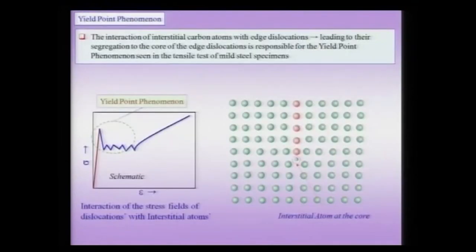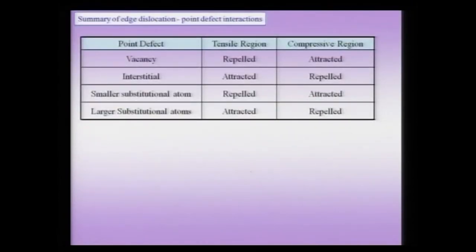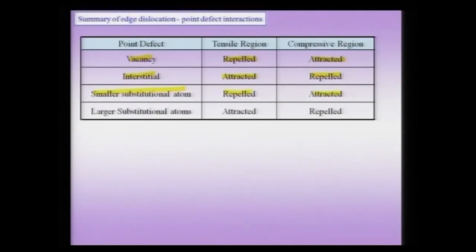The most important case is the attractive interaction of carbon solute atoms towards edge dislocations in BCC iron. From the character table: a vacancy is repelled from the tensile region and attracted towards the compressive region. An interstitial atom behaves in the opposite way — attracted towards the tensile region and repelled from the compressive. A smaller substitutional atom behaves similar to a vacancy. A larger substitutional atom is attracted towards the tensile region and repelled from the compressive region — similar to an interstitial atom — but the key difference is that the distortion field of an interstitial atom may have a shear component, so it can also interact with screw dislocations.